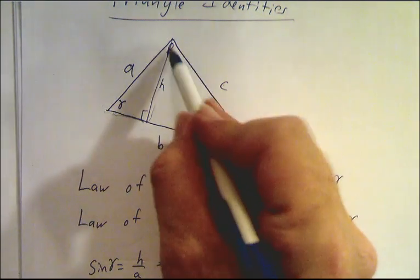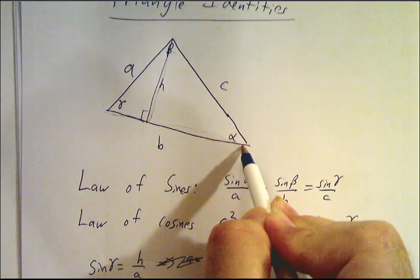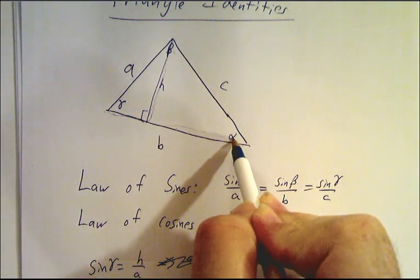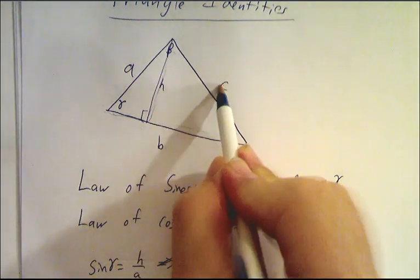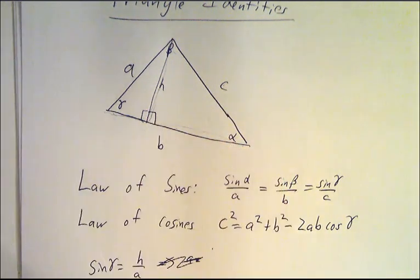But now if we look at this triangle here, the sin of alpha is the opposite over the hypotenuse, because this is also a right triangle. So the sin of alpha is H over C.